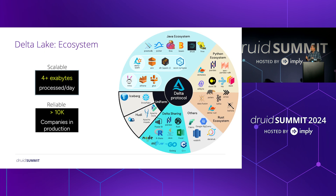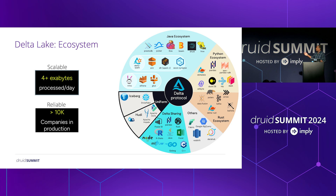Here is a brief slide about the Delta Lake ecosystem. It is used in production at scale — more than 10,000 companies use it in everyday workloads. On the right you can see a diagram of all the connectors you can use to read or write Delta Lake tables, including Trino, Druid, Flink, and a vibrant Python ecosystem like Pandas and Dask. All of these are done in open source.